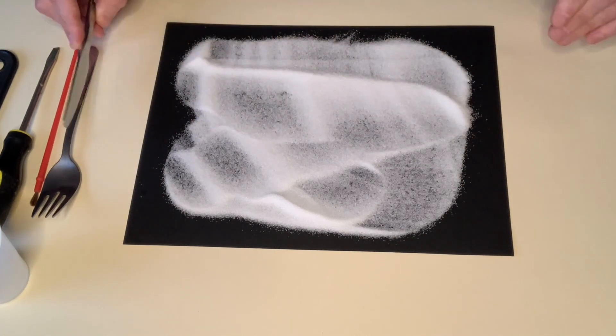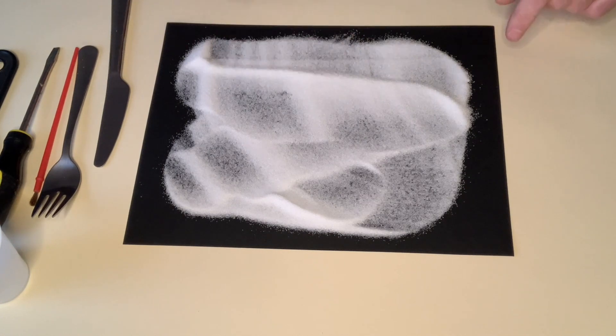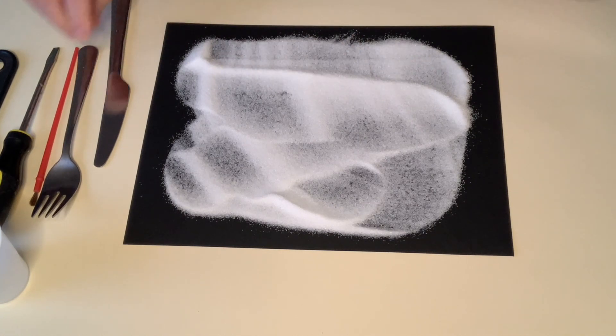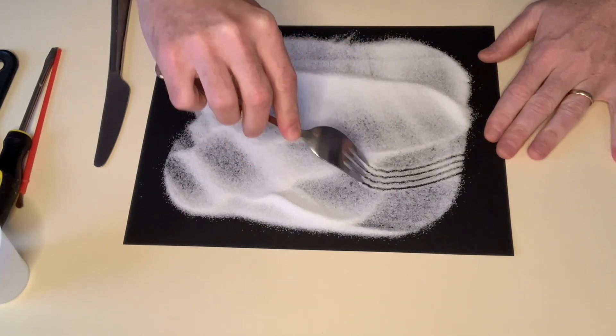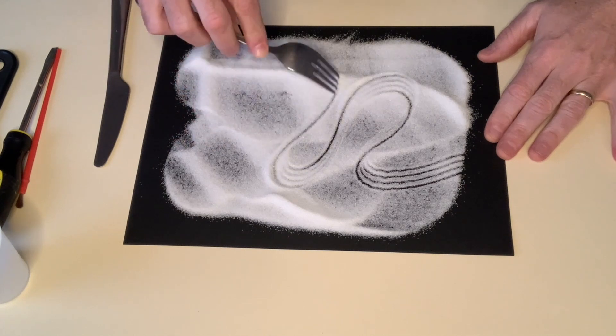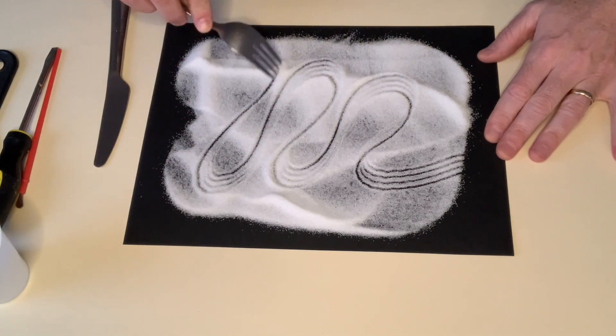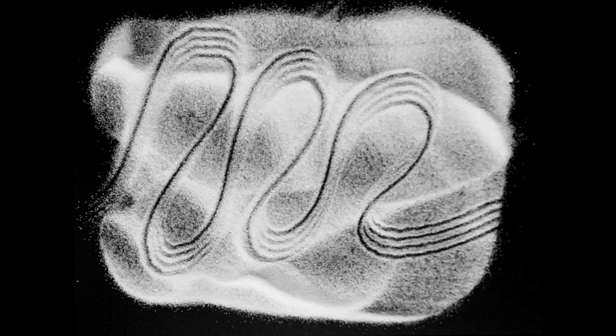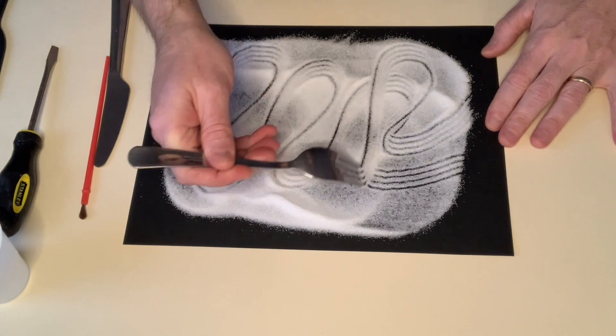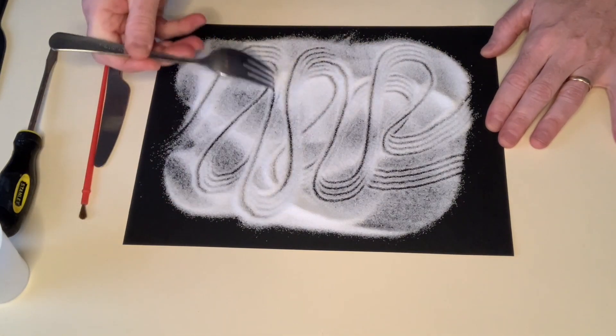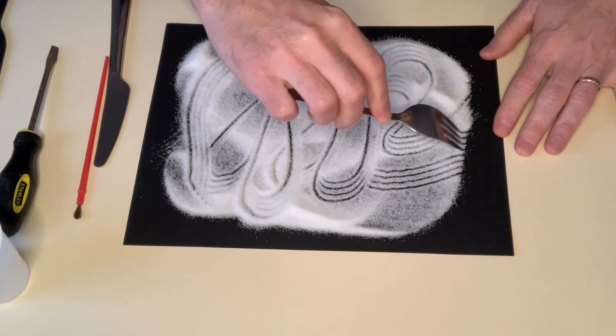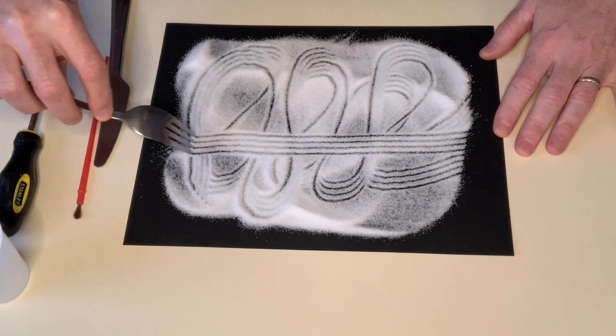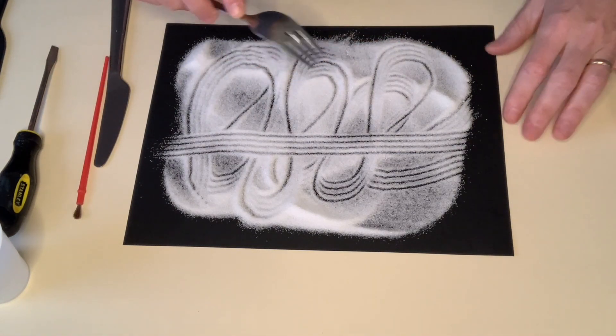And so now I've sort of spread it out and I could then draw into this again with my finger if I want. But maybe I'll try a different tool. What about my fork? Let's try some more with the fork.